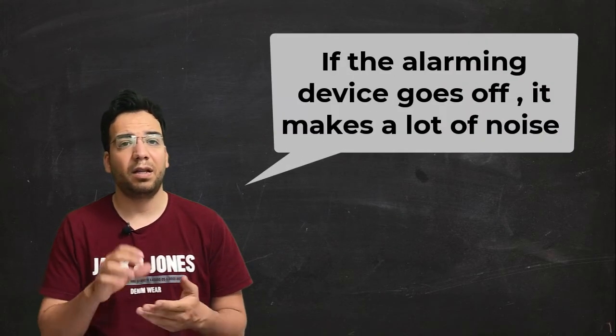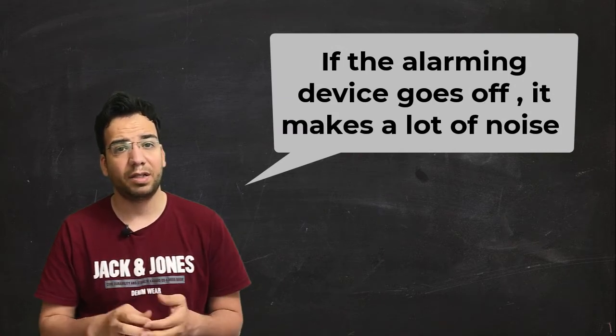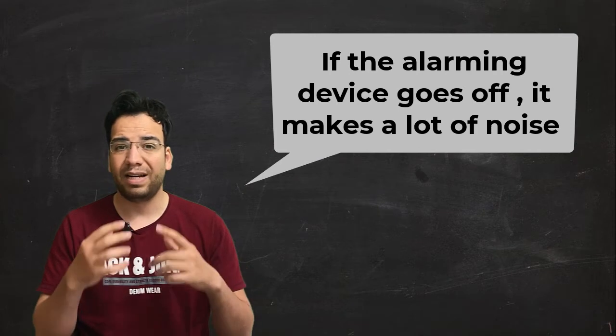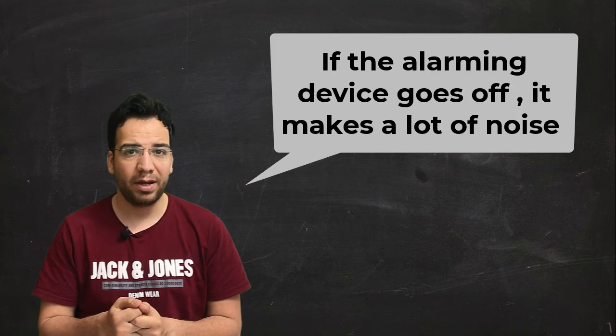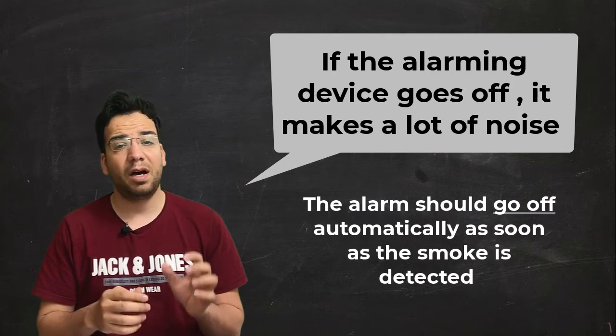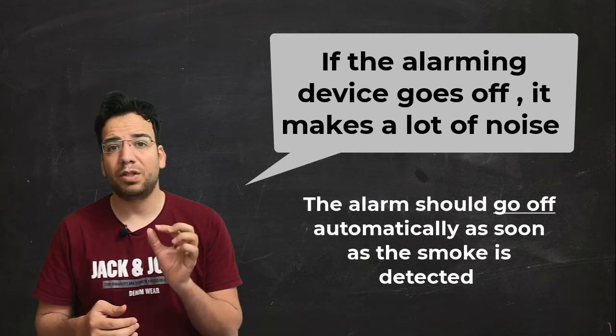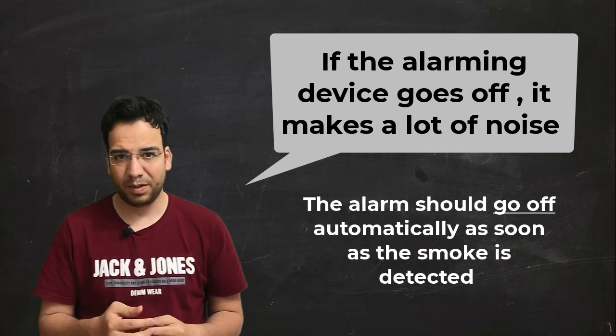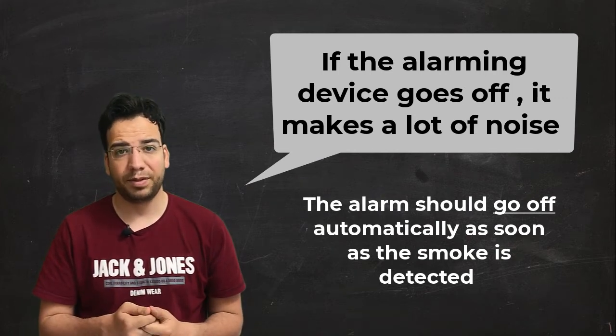Let's understand the other meaning of the phrasal verb go off. My dear friends, if the alarm, if the alarming device goes off, it rings loudly and it makes a lot of noise. Let me give you some examples. For example, the alarm should go off automatically as soon as the smoke is detected. So the alarm should ring loudly and make a lot of noise.